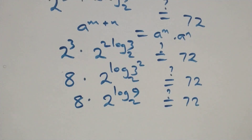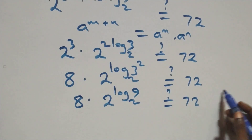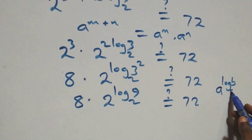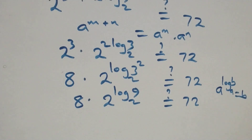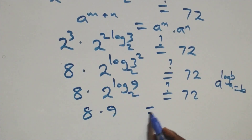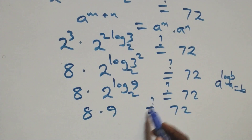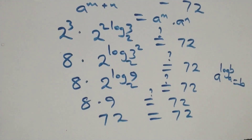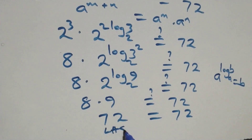This follows from the rule that a raised to power log base a of b equals b. Applying this, 2 raised to power log₂9 equals 9. So we have 8 times 9 equals 72, and indeed 8 times 9 gives us 72, which equals 72. Hence the left-hand side equals the right-hand side.